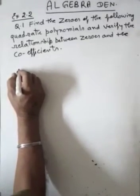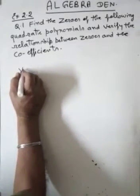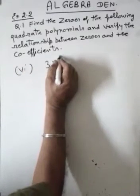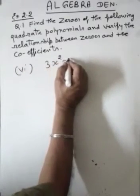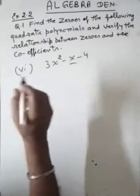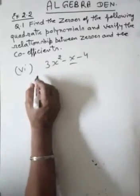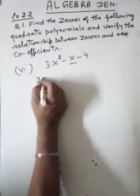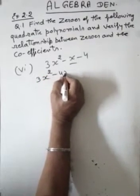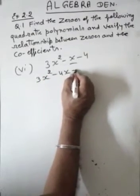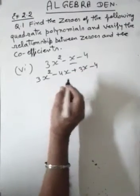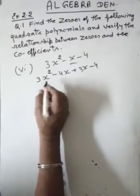The 6th part equation given is 3x squared minus x minus 4. Here we will split the middle term in such a way to make the factorization: 3x squared minus 4x plus 3x minus 4.